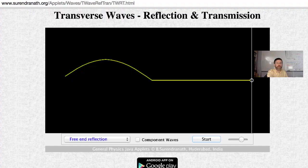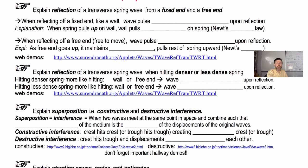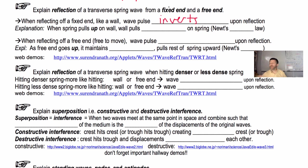We're going to fill in the blanks and then explain why this happens. When reflecting off a fixed end, like a wall, the wave pulse inverts upon reflection — it turns upside down, a crest turns into a trough.